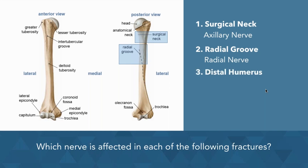Next let's look at the distal humerus, which can be seen highlighted here. The median nerve is the nerve that would be affected by a fracture of the distal humerus.